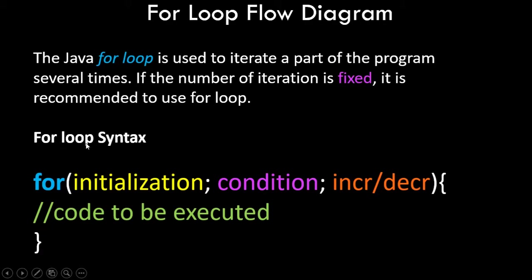This is the basic syntax of for loop. We have to write the keyword 'for', then opening and closing round brackets. We have to give some initialization — we can initialize a variable, let's say i equals to zero. Then we have to check for the condition.